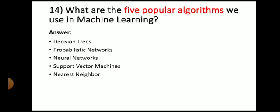Next question: what are the five popular algorithms we use in machine learning? The answer is: decision tree, probabilistic network, neural network, support vector machine, and nearest neighbor.